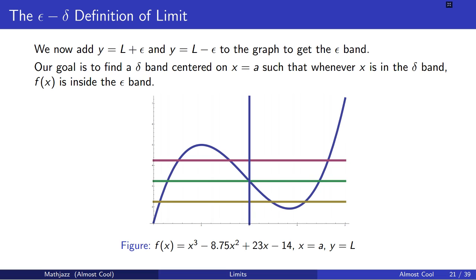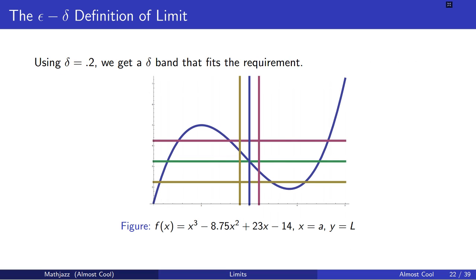Our goal is to find that delta band centered on x equals a. I have to find some region from a minus delta to a plus delta so that when my function is within these x values, f of those x values is within the epsilon y values. Here are the two lines: a minus delta is the yellow vertical line and a plus delta is the pinkish-purplish line. Notice that if I stick between the yellow and purple vertical lines with my x values, my function stays between the yellow and purple lines on the y values. So this delta works for this epsilon.